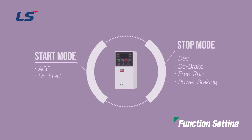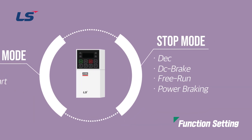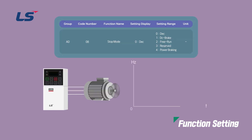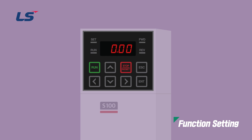Let's see how to set the stop method. The DEC stop method is a general deceleration stop method. If no other function is selected, the deceleration time will be affected by the deceleration time to slow down to 0 Hz and then stop. In the AD8 stop mode, press the enter key to set the stop method. Use the arrow keys to move to 0 DEC and press enter to complete the setting.